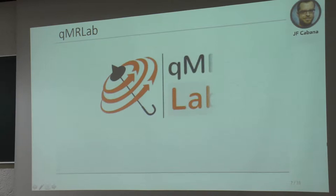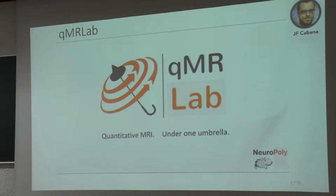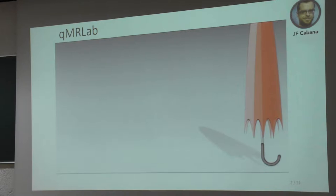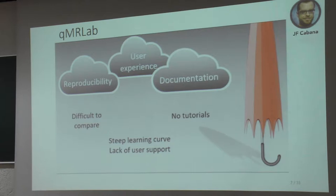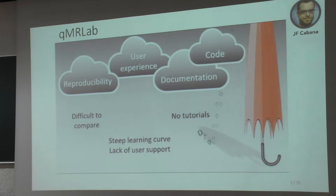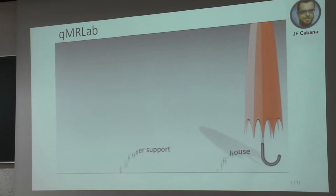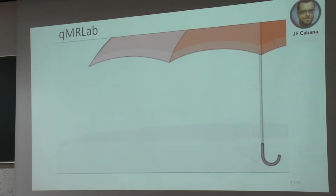Hello everyone, welcome to QMRLab, our group's attempt to put quantitative magnetic resonance imaging under one umbrella. Currently, quantitative MRI is burdened by several problems such as poor reproducibility, which makes it difficult to re-implement and compare different methods. There are difficulties with user experience due to lack of support, resulting in a steep learning curve. There is also scarcity of documentation and tutorials, and code that has many dependencies, is developed in-house, and is difficult to share. That is why quantitative MRI is in need of standardization.